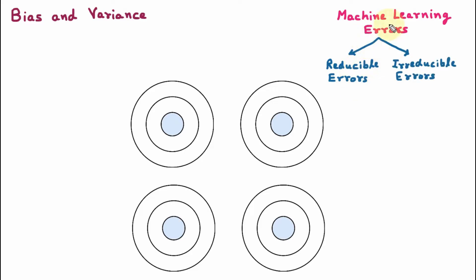When we design a machine learning model, these two errors may be encountered. The irreducible errors are those errors which we cannot reduce. But reducible errors are those errors which can be reduced, just like bias and variance. So bias and variance are the reducible errors of machine learning.